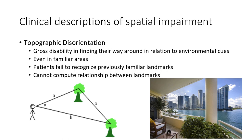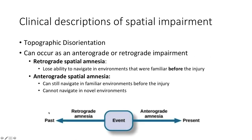Multiple variations in symptoms of topographic disorientation have been described. Some patients are unable to name buildings or landmarks that used to be familiar to them, while others might retain this ability. Some patients can still describe routes and draw maps, but become disoriented when they actually visit those locations. And sometimes people have difficulties calculating how far items are from them. Topographic disorientation can occur because someone cannot recognize previously familiar landmarks, cannot compute the relationship between landmarks, or is impaired in spatial guidance.